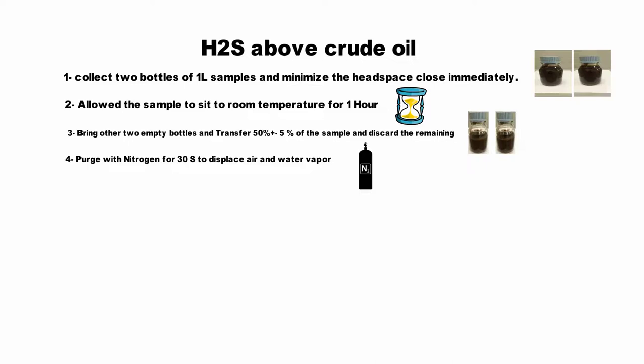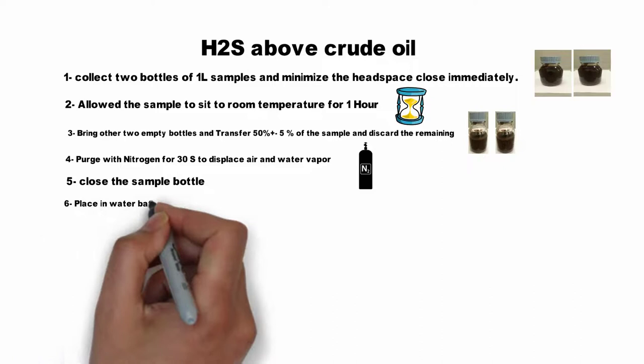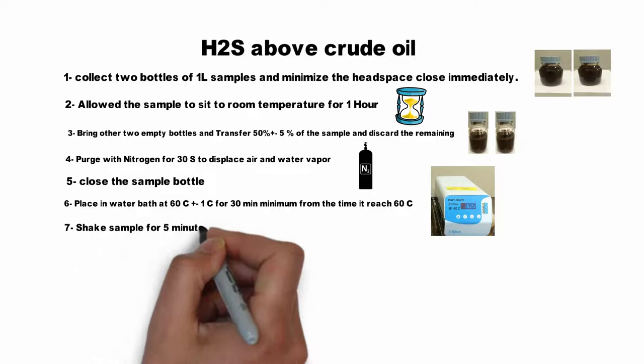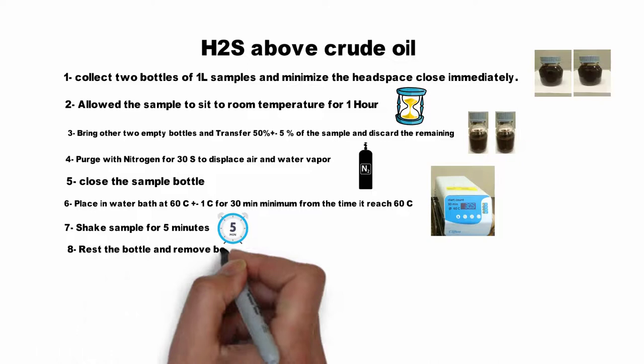Place the samples in a water bath at 60 degrees plus or minus 1 degree for a minimum of 30 minutes from the time it reaches 60 degrees. Shake the samples for 5 minutes. Then rest the bottles, remove the bottle caps and seal the bottles with aluminum foil immediately.